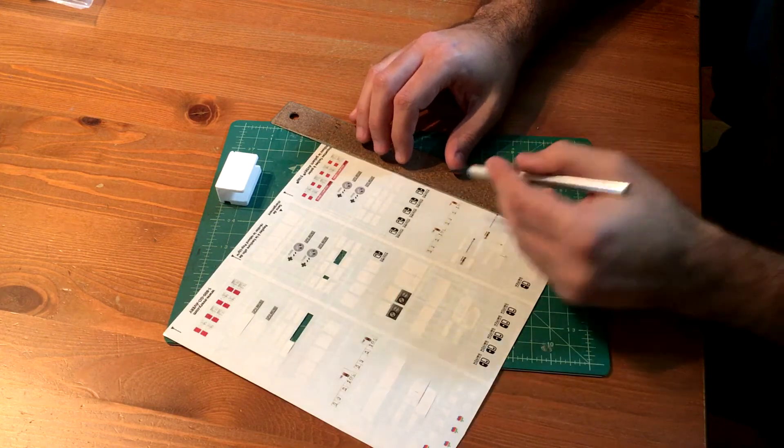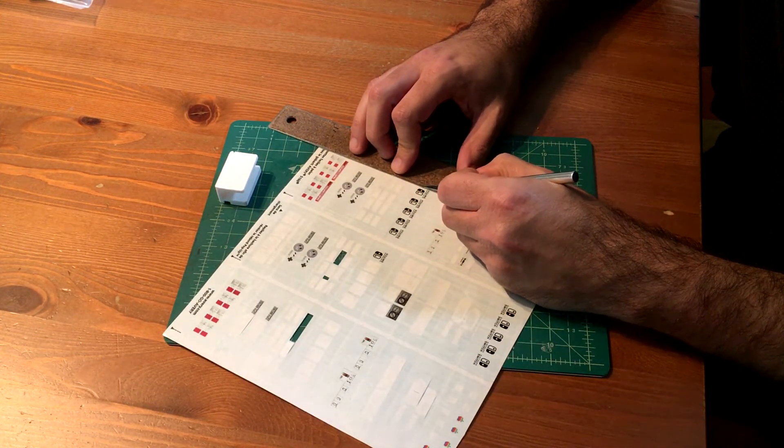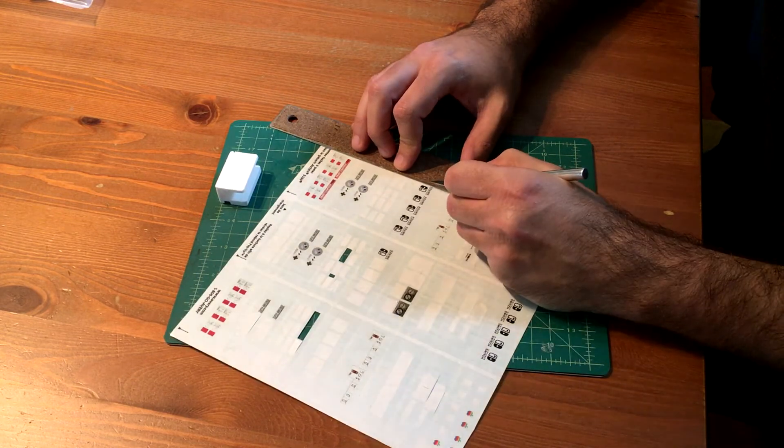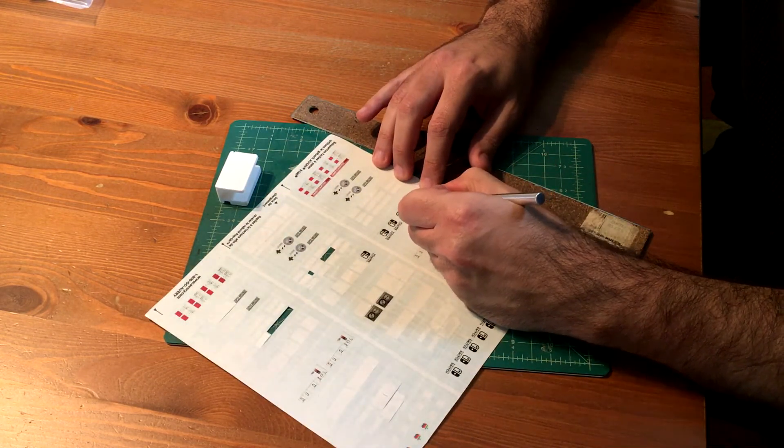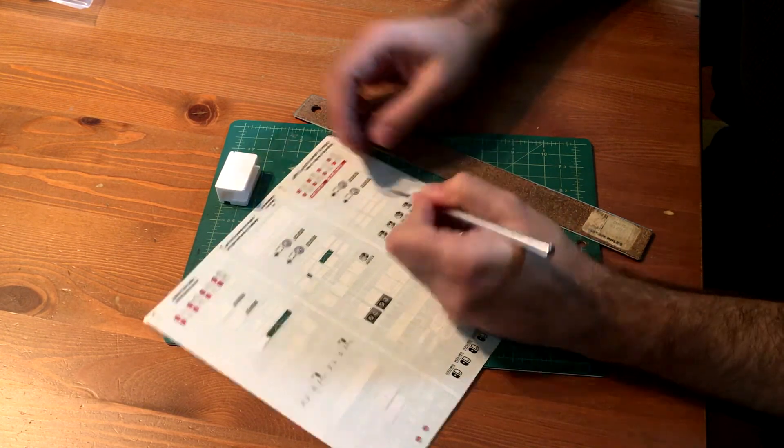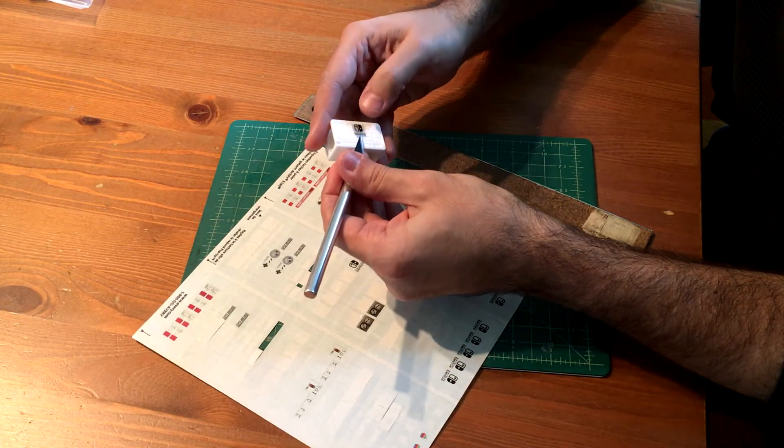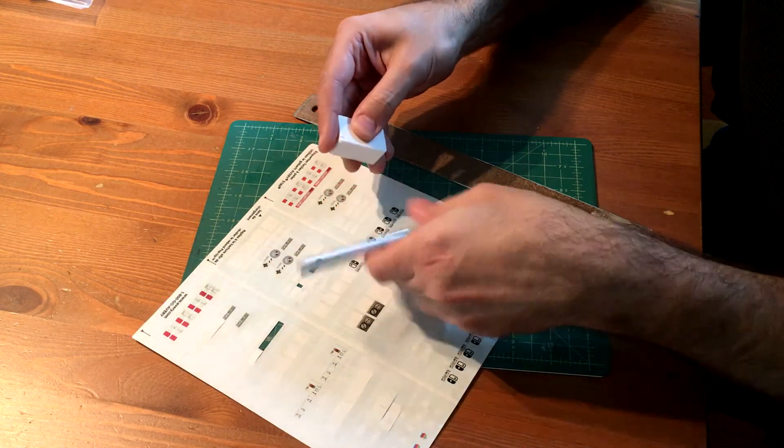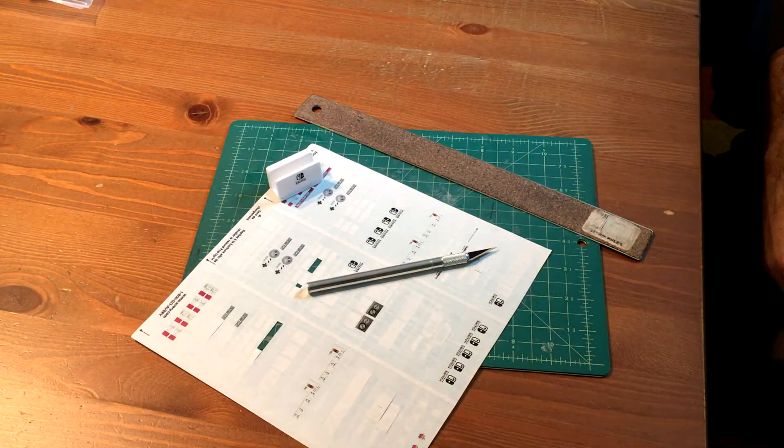So once you've printed, you want to use a knife and a ruler, and we're going to cut as close as we can to the sticker itself. And then we will lift it out and then just apply it to the right place on the mini machine. Just as simple as that. And once you've got all stickers in place, then your machine is done.